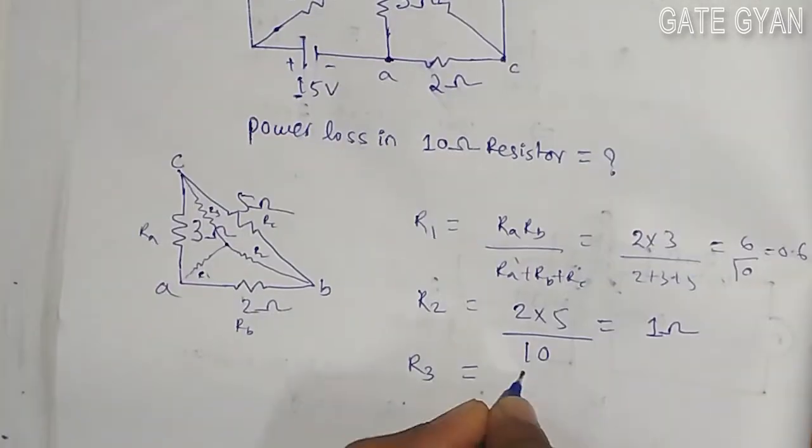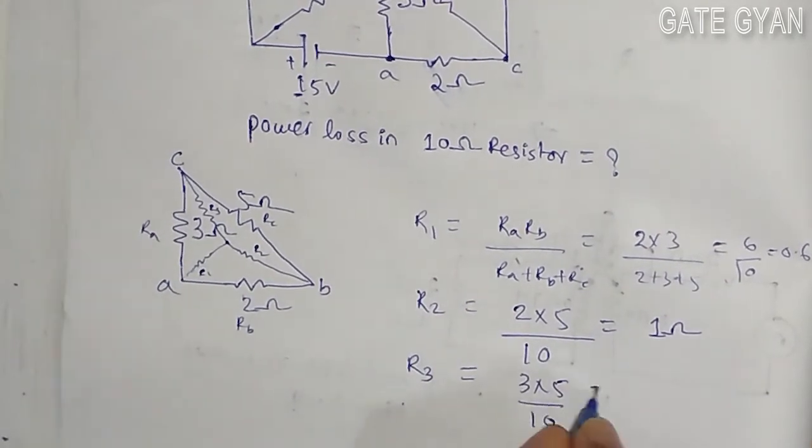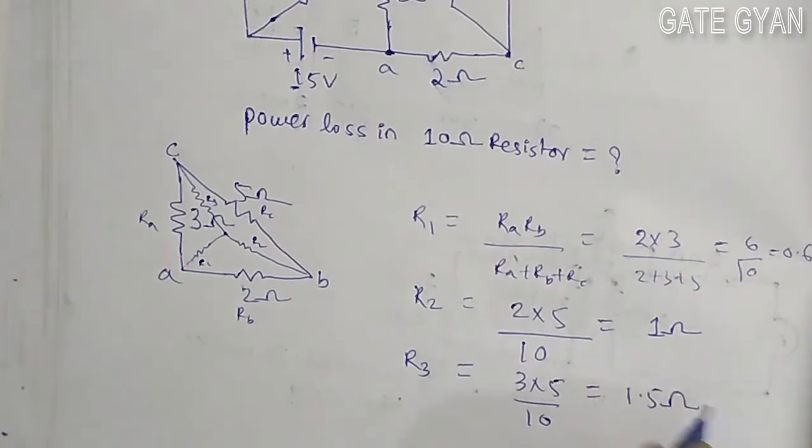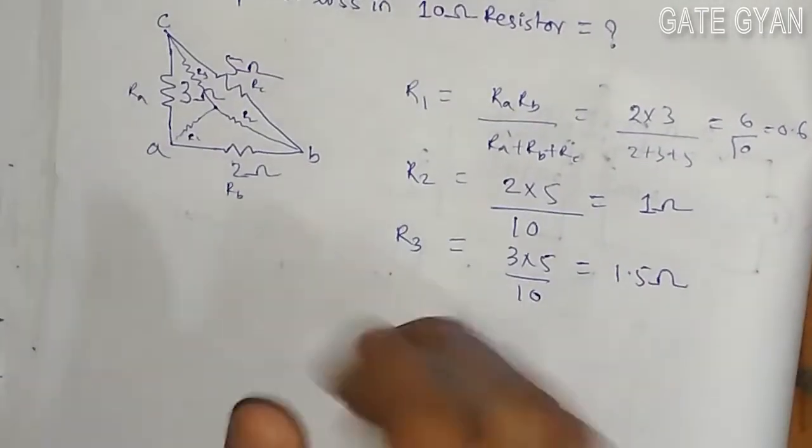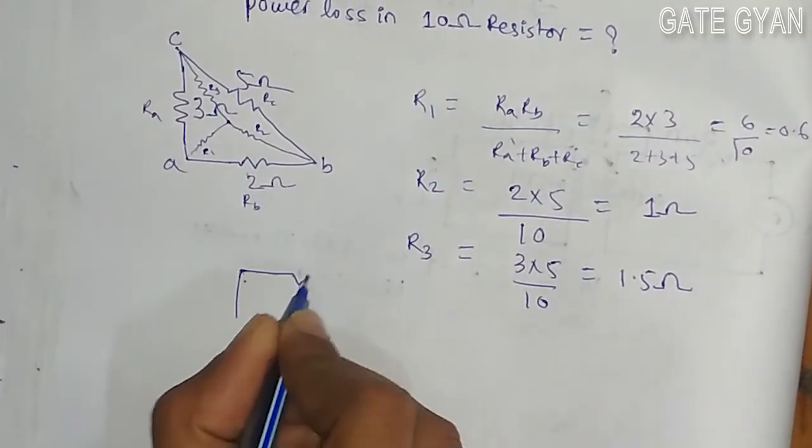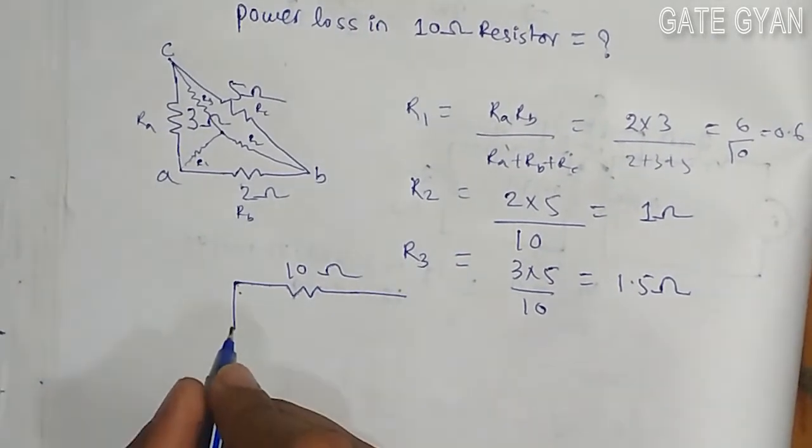And r3 is going to be 3 into 5 divided by 10, that is going to be 1.5 ohm. So I will replace this delta transformation to star, so my circuit will look like this is 10 ohm, this is 10 ohm.